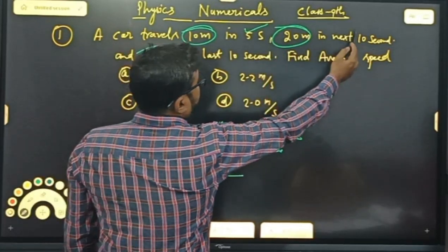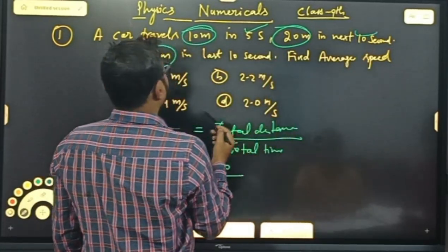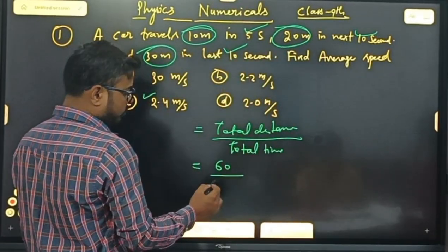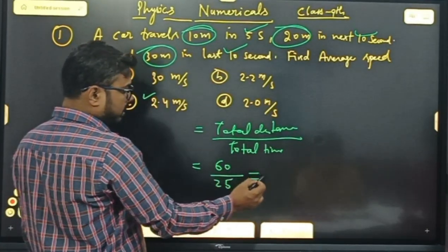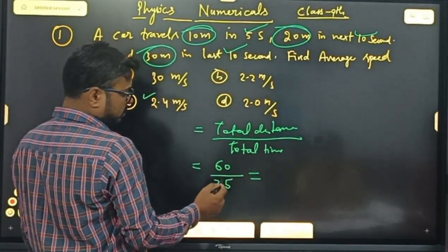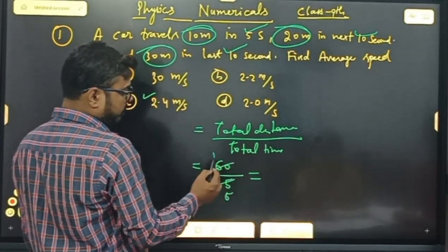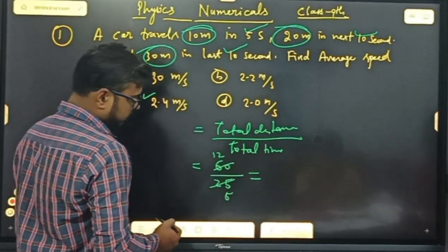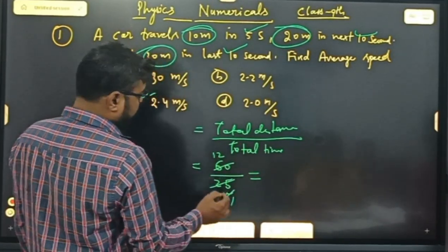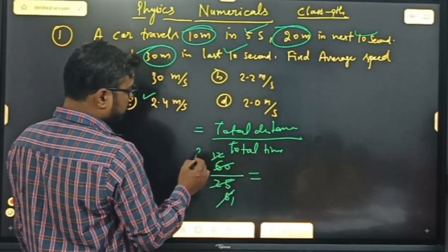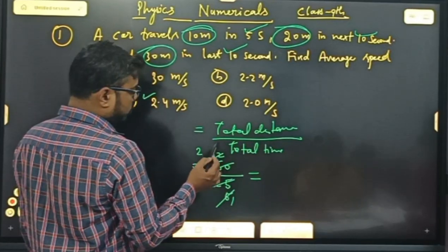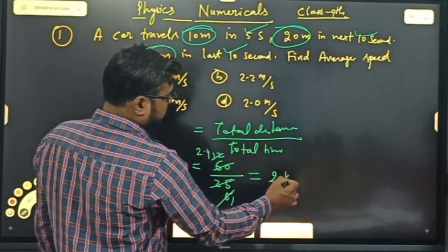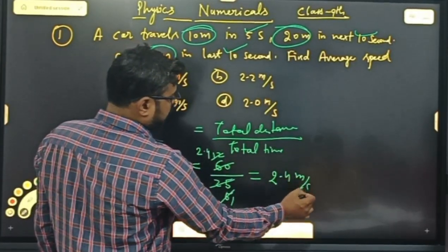Total time: 5, 10 और 10 = 25 seconds. Divide करो: 60 upon 25. Simplify करते हैं — 5, 5, 5, 5 cancel — 2.5 जा 10 — तो 2.4 meter per second आया। Answer है C, 2.4 meter per second.